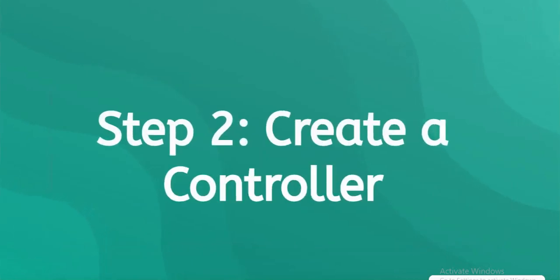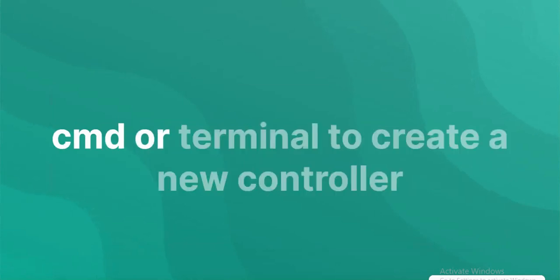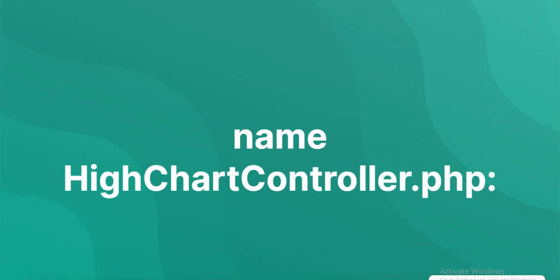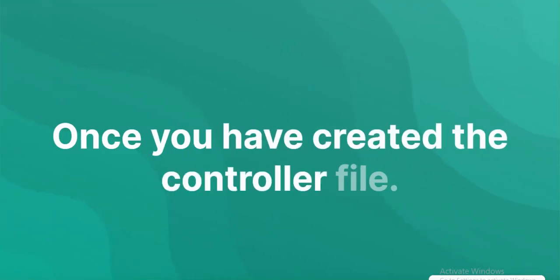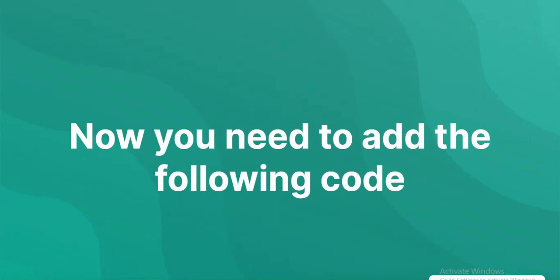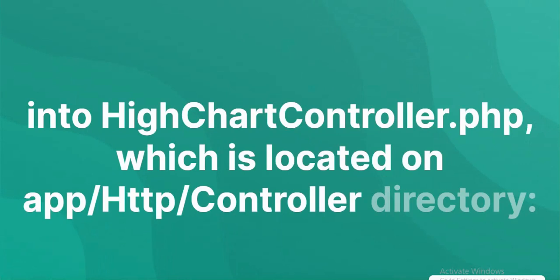Create a controller. Execute the following command on cmd or terminal to create a new controller named HighchartController.php. Once you have created the controller file, add the following code into HighchartController.php, which is located in the app/Http/Controllers directory.